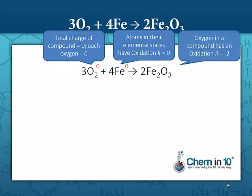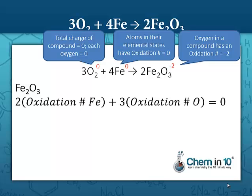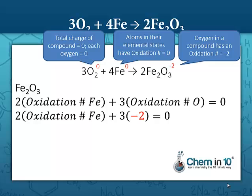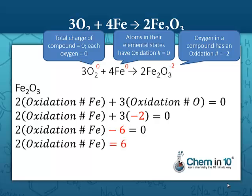We're also told that oxygen in a compound has an oxidation number of negative two, so all we have left to do is calculate the oxidation number of iron in iron oxide. The total charge of iron oxide has to be zero because it's a neutral compound, so two times the oxidation number of iron plus three times the oxidation number of oxygen equals zero. Substituting negative two for oxygen: two times the oxidation number of iron plus three times negative two equals zero. Three times negative two is negative six, so two times the oxidation number of iron minus six equals zero. Adding six to each side gives two times the oxidation number of iron equals six, and dividing by two gives the oxidation number of iron as plus three.